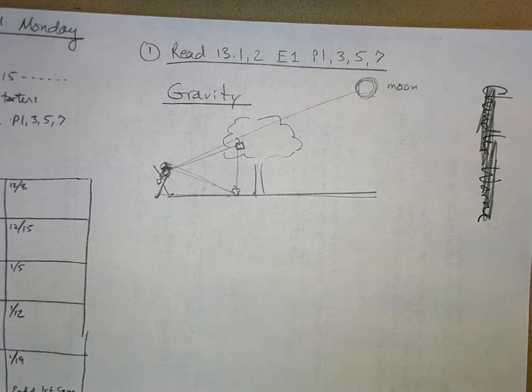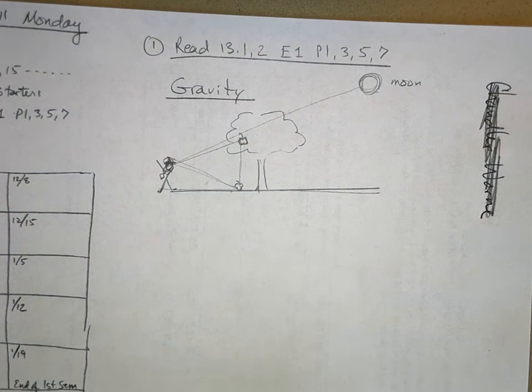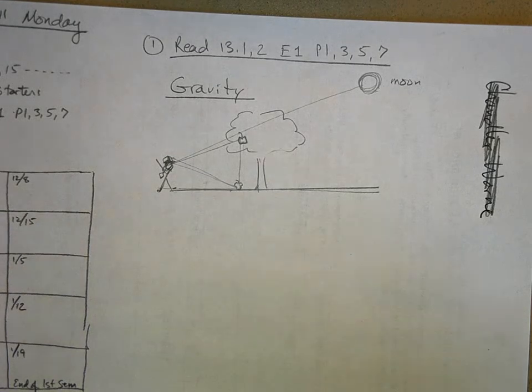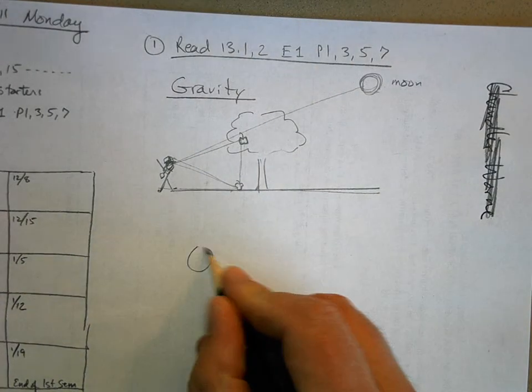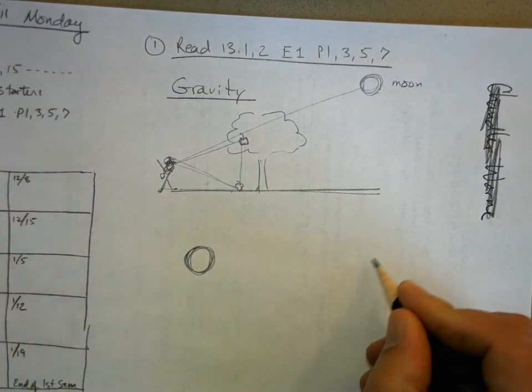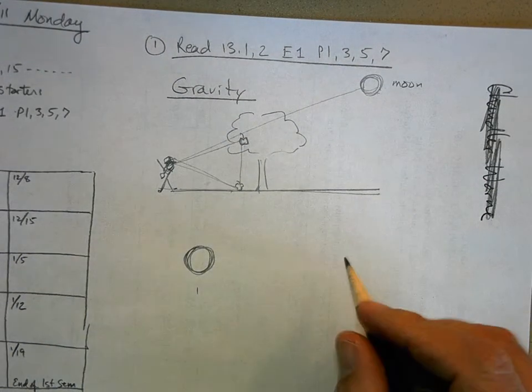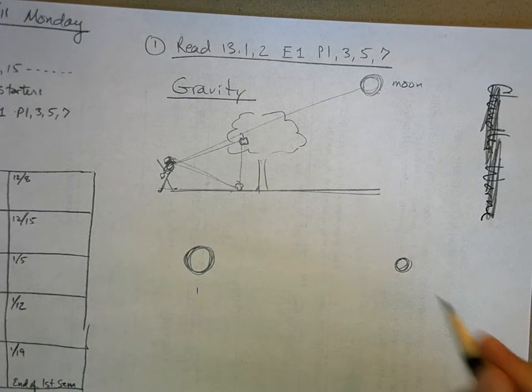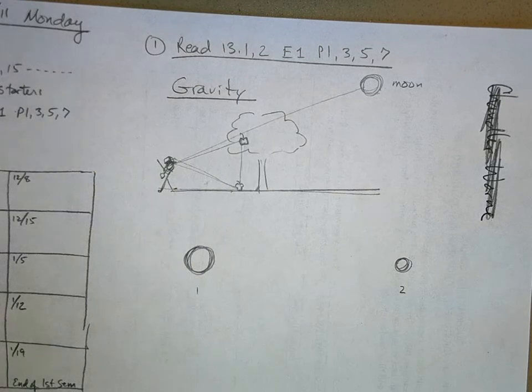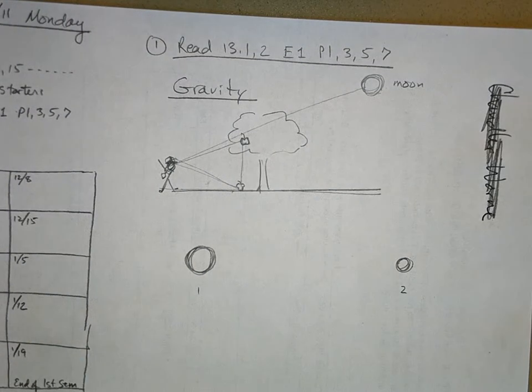So what did, you know, how does this work? Well if you have two objects, we'll call this object one, it could be the earth, and here's another object that could be the moon, object two. Here's what Newton figured out, and he didn't do this in an afternoon, okay? This took a long time, a lot of work and a lot of trial and error, but these are the results.